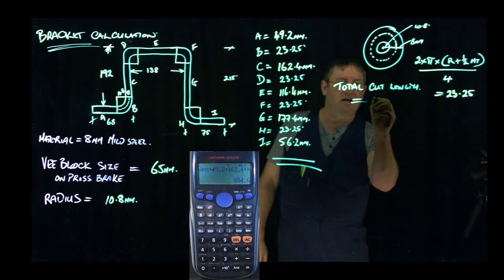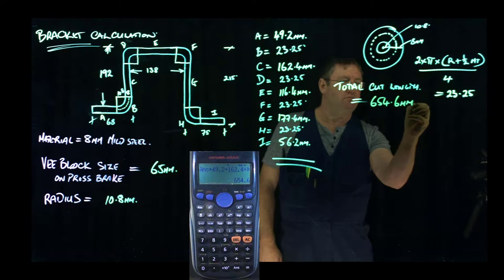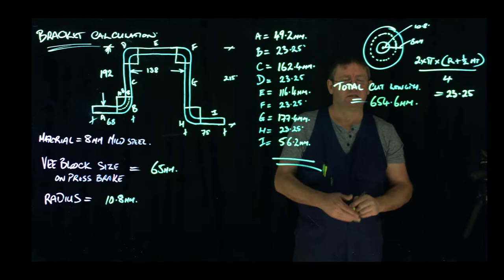Well, you'd go and round that up, wouldn't you? You'd round that up to 655mm. So immediately you can go to the steel rack and cut a piece of bar at 654mm long, or 655mm long.